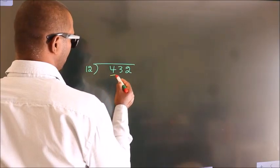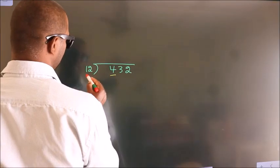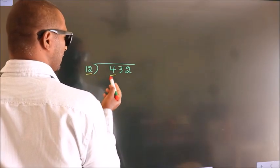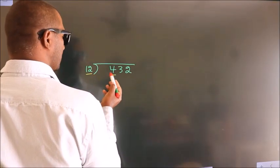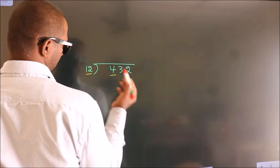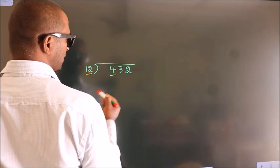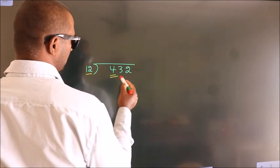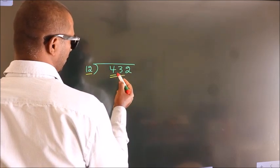Here we have 4, here 12. 4 is smaller than 12. So we should take two numbers: 43.